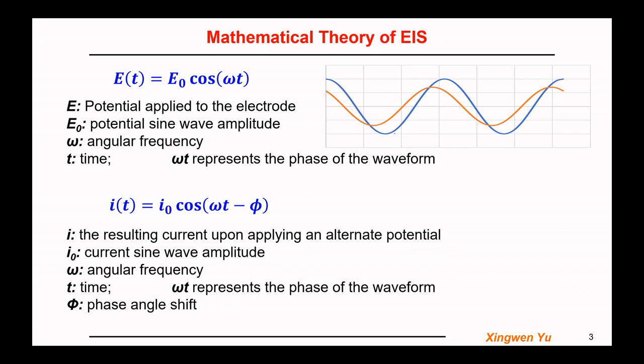When we apply an alternating potential to an electrochemical system with a cosine wave function, E(t) equals E₀·cos(ωt). E here refers to the potential applied to the alternating electrode. E₀ is the potential sine wave amplitude. The amplitude here is usually a very small value — between 5 to 10 millivolts — because only with a small amplitude of the potential can E and I approximately follow a linear relationship. Omega (ω) is the angular frequency applied, t is the time, and the term ωt represents the phase of the waveform.